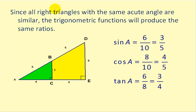All right triangles with the same acute angles are similar. If we have that case, the trigonometric functions will produce the same ratios because we know that these triangles are proportional. If you take a look at the large right triangle and the small green triangle, they share a common angle and they also have two right angles, so by angle-angle they are similar right triangles.